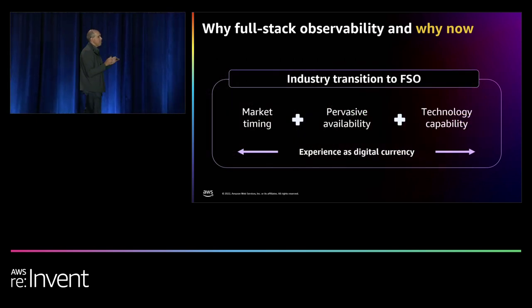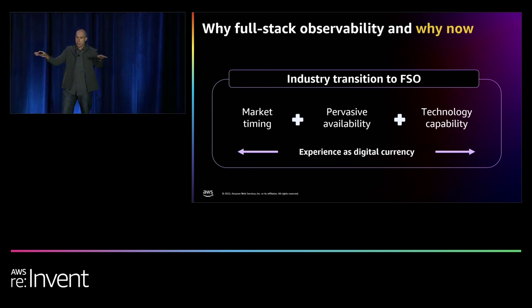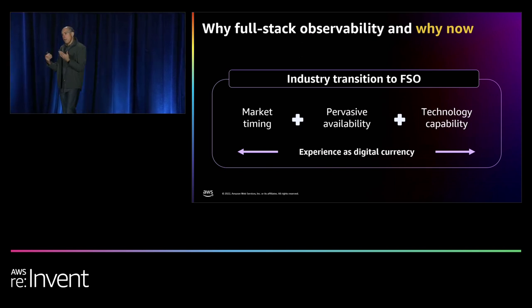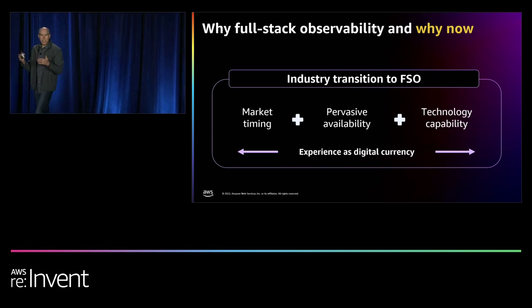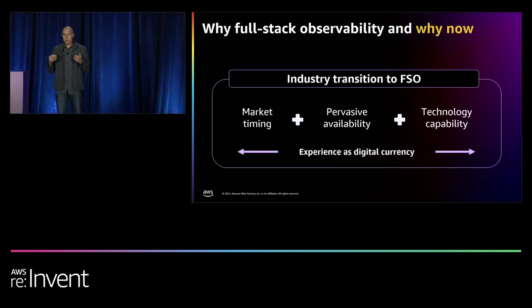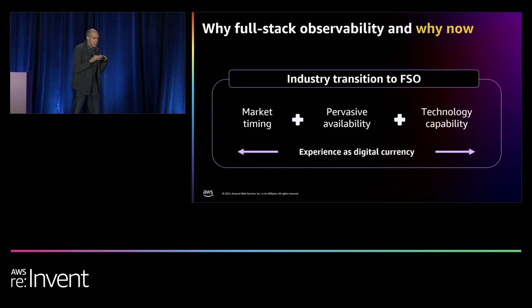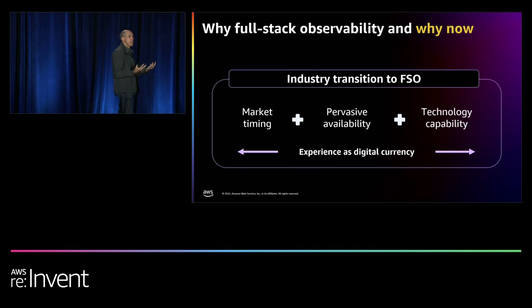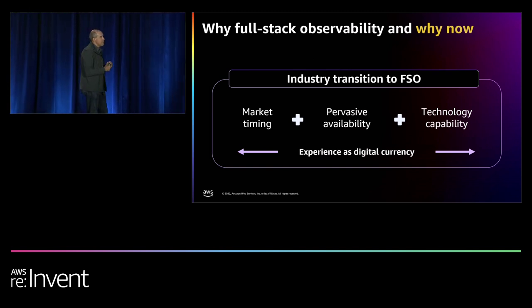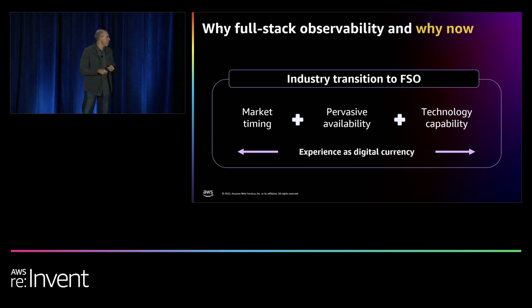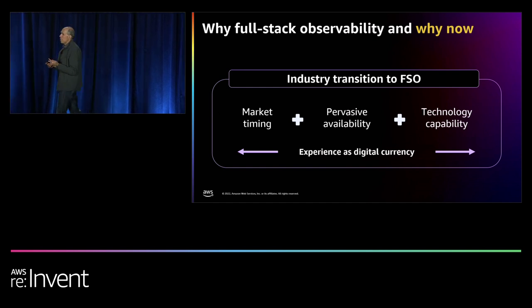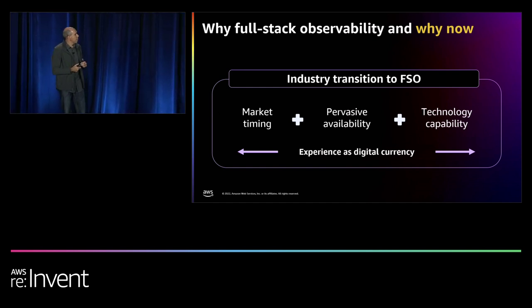The why now comes down to two major things. I've explained the industry transition toward full stack observability, but there's an underlying foundation: as every business evolves toward digital — with employees and customers working from home — experience becomes the actual digital currency. There are three pillars for why it's needed now: timing to market, availability of pervasive resources, and technical capability.